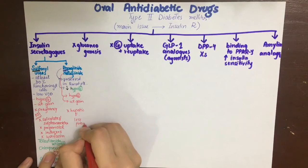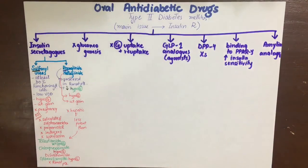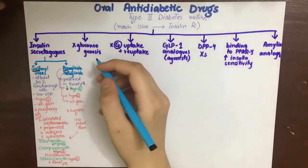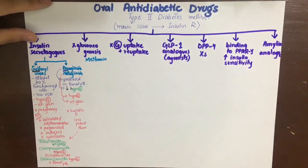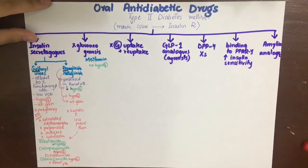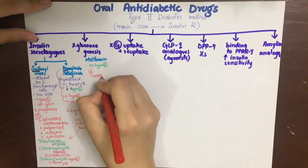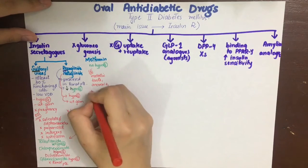The next class of drugs inhibit gluconeogenesis. The chief drug is metformin, a biguanide. It has no effect on insulin release, is well absorbed orally, and does not cause hypoglycemia. Side effects include metallic taste, anorexia, loss of weight, and skin rash. A rare but important and serious side effect is lactic acidosis.